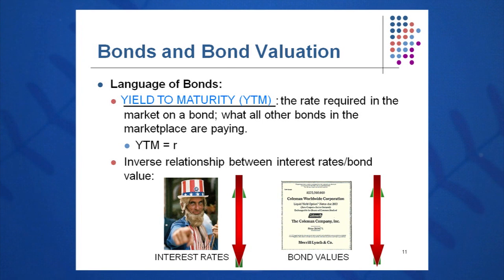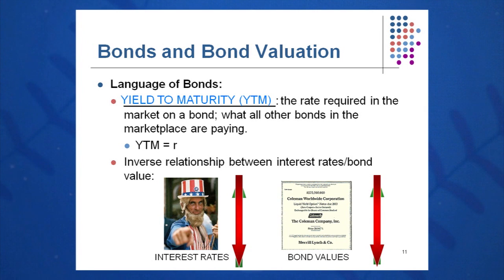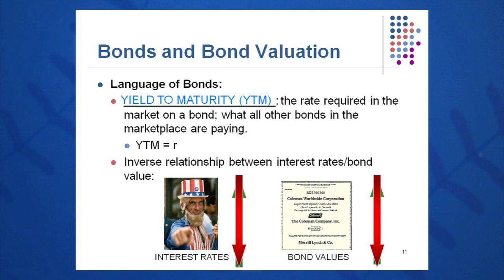Yield to maturity is a very important term. Notice the bond formula has five variables, and if we're given four, we can calculate the fifth. Essentially YTM is little r — it is the rate required by all other bonds in the market at the time. My bond will always pay 8% over the course of 30 years, but all other bonds in the market will be paying differing rates. Interest rates will go up and down. If I need to sell that bond, the price I get will be influenced by what is happening to interest rates at that time.